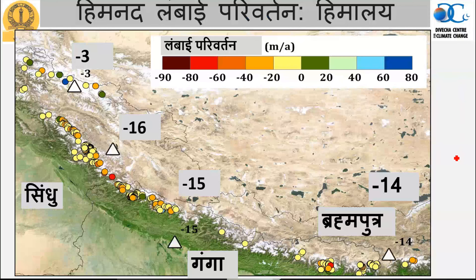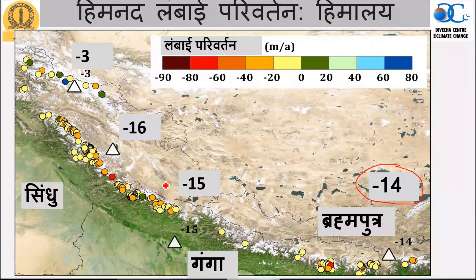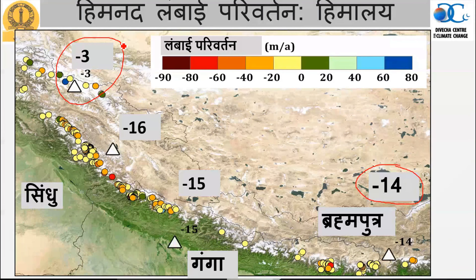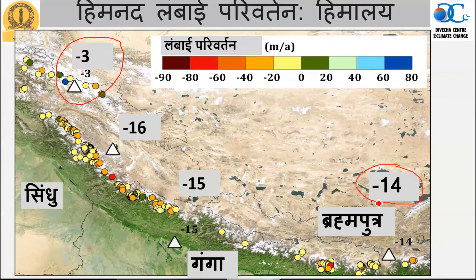Some regions of the Brahmaputra river basin are reducing approximately 14 meters per year in glacier length — around 15 to 16 kilometers of length reduction. However, there is significantly less reduction in the Karakoram mountain range compared to the central or eastern Himalayas. There is only marginal decrease in glacial length in the Karakoram region, and this is a very important issue to understand.